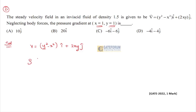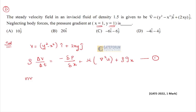We have the Navier-Stokes equation: ρ(∂V/∂t) = -∂p/∂x + μ∇²u + ρg. For inviscid flow, μ∇²u = 0, and with body forces neglected, ρg = 0. The equation reduces to: ρ(u ∂u/∂x + v ∂u/∂y) = -∂p/∂x.